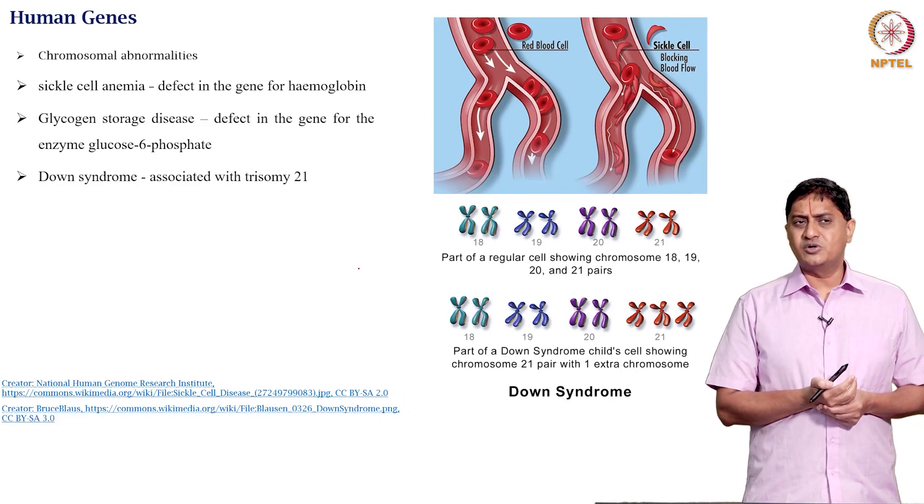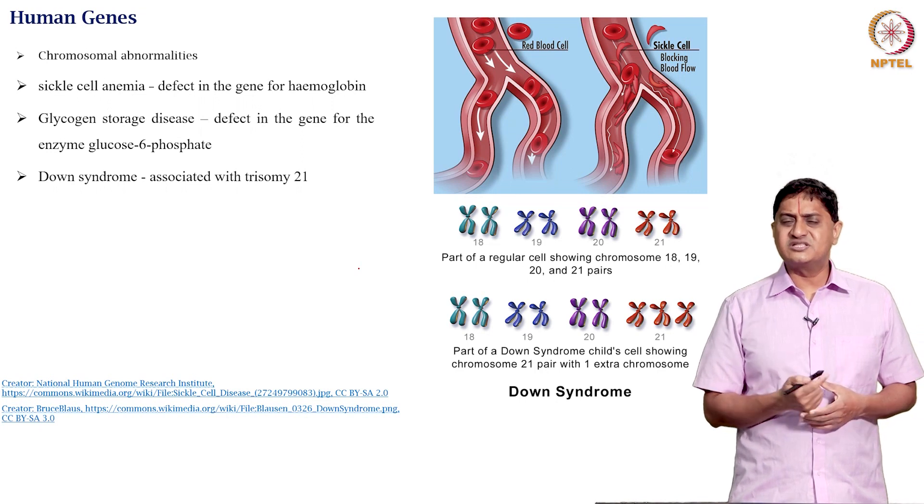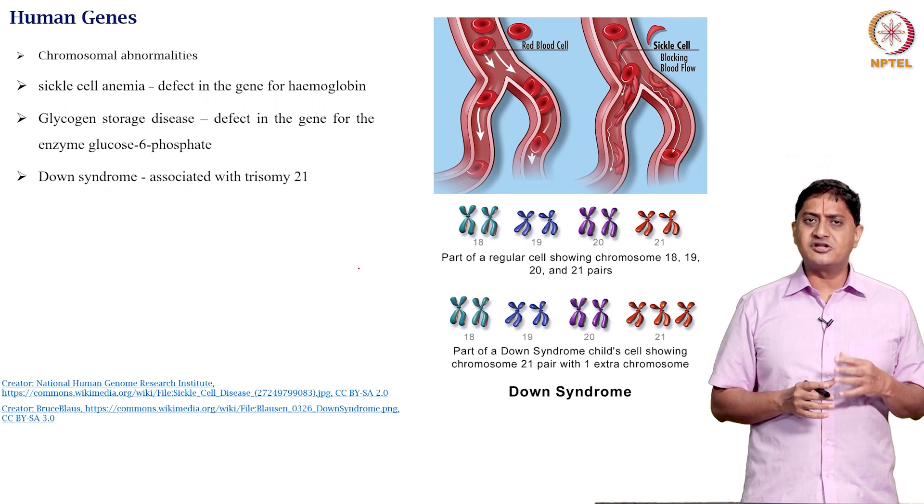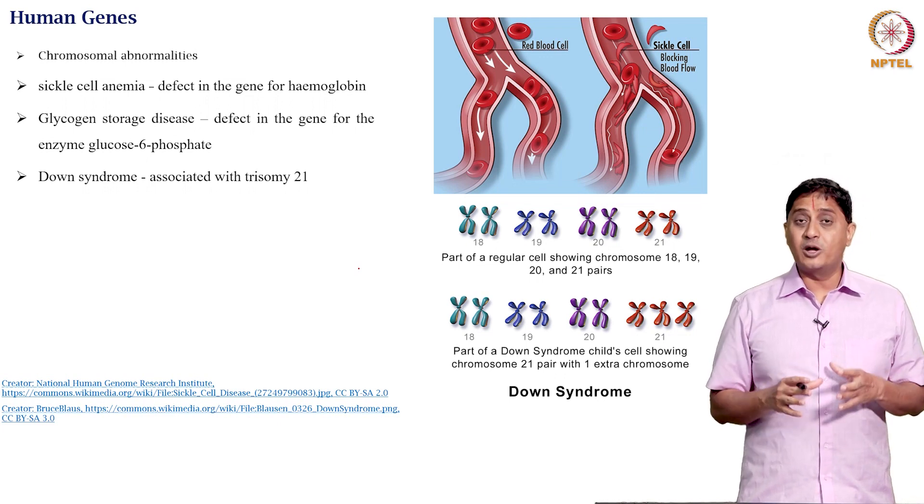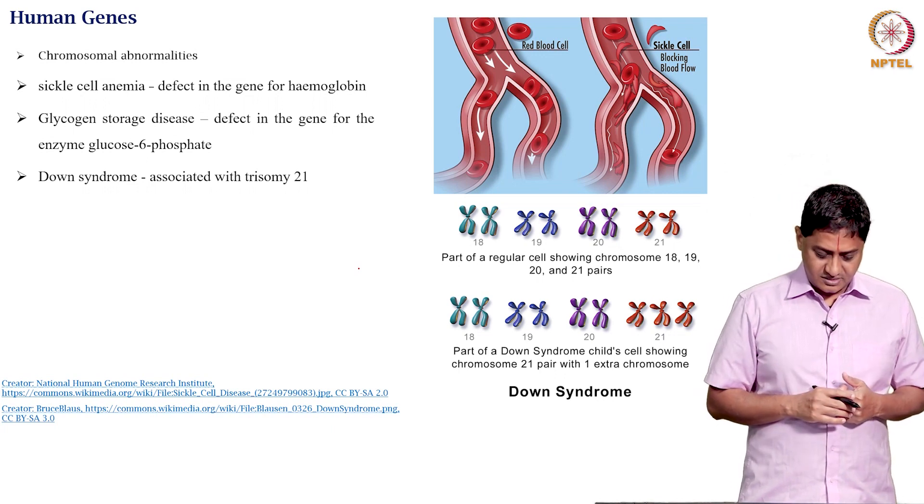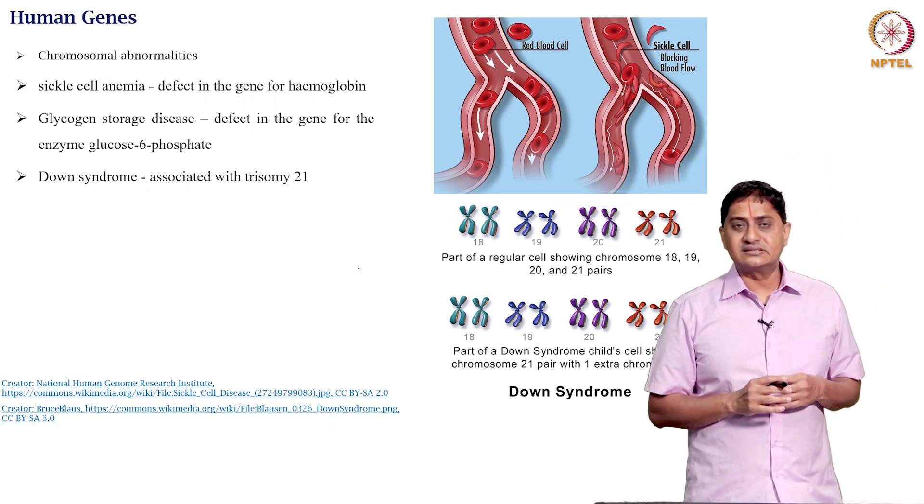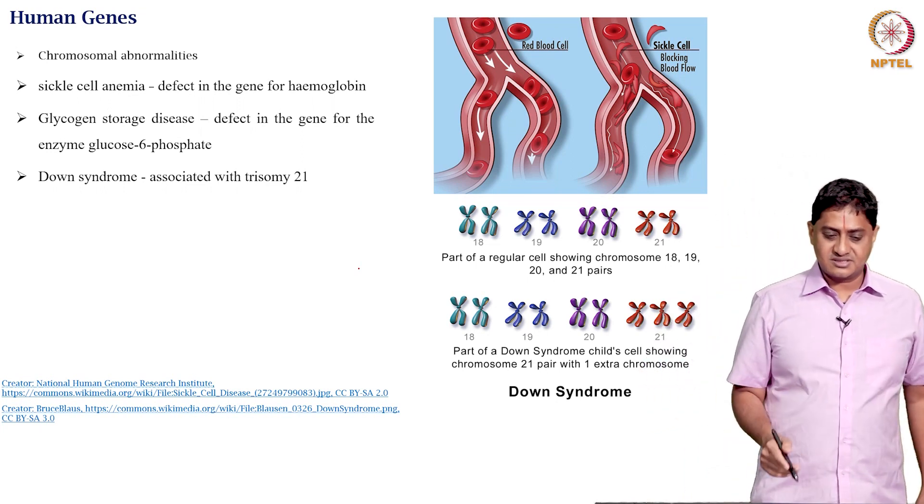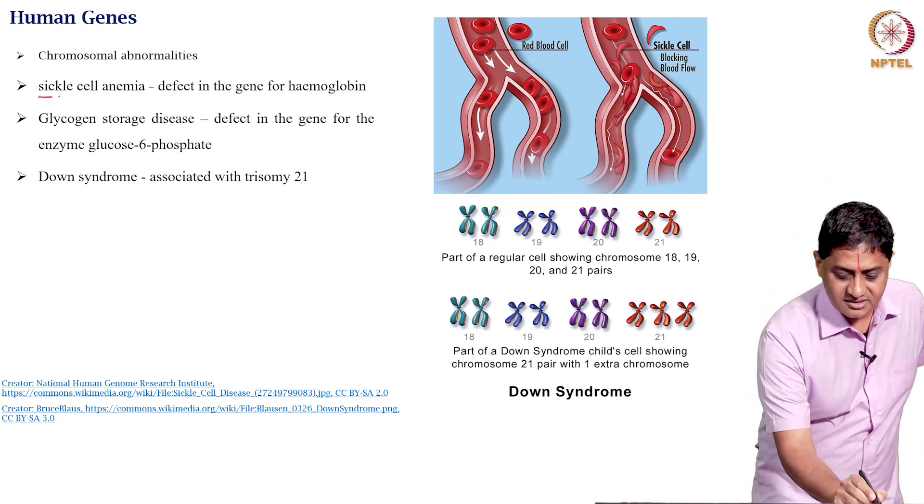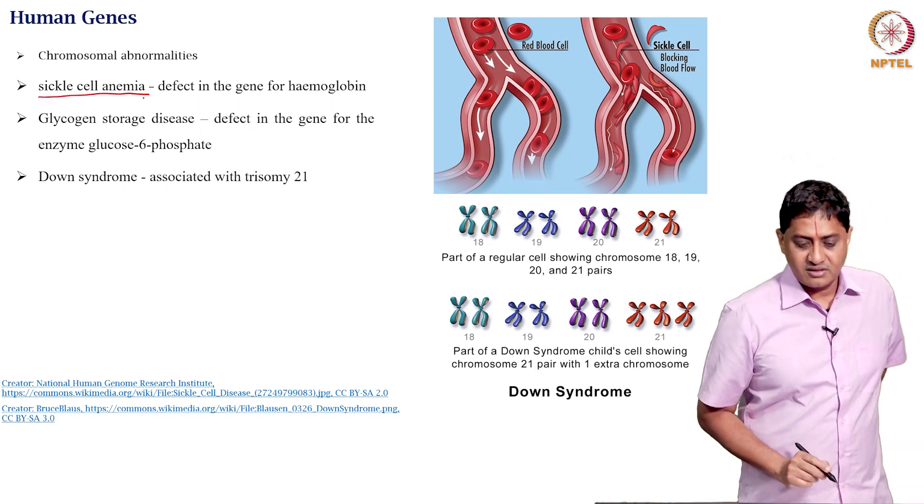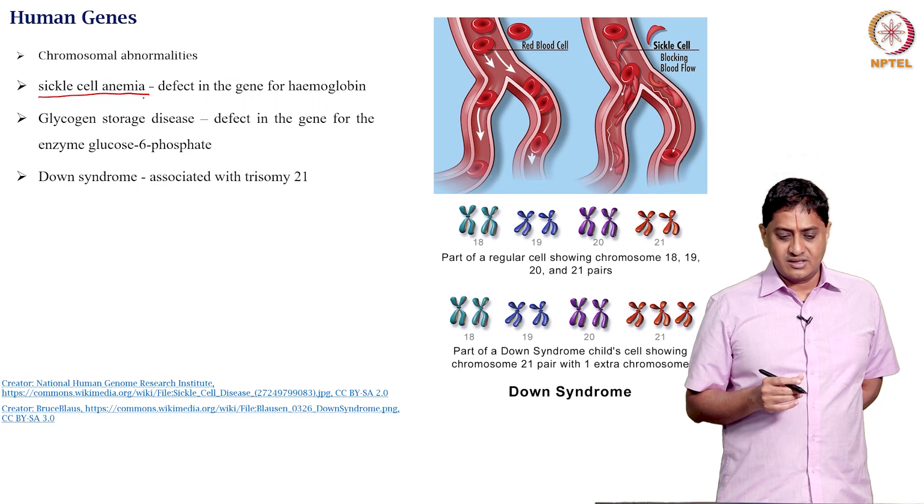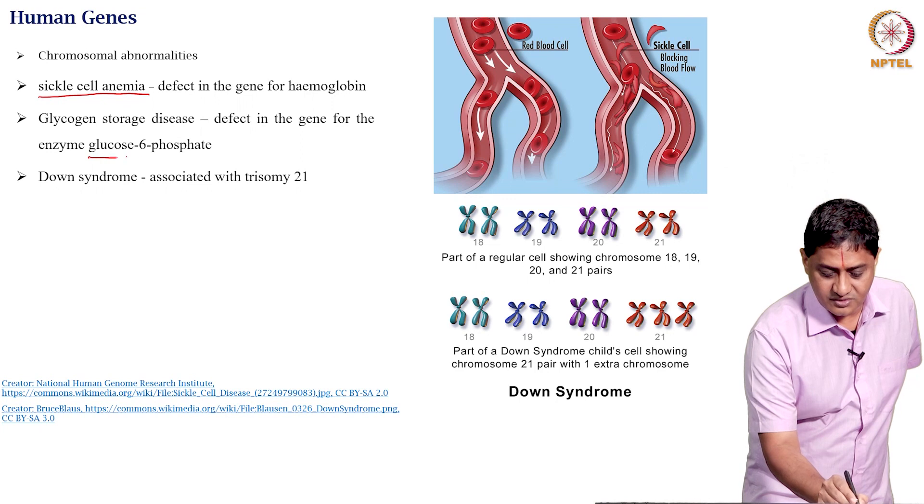Another idea that came about was that specific clinical disorders were somehow correlated with abnormal arrangement or abnormal chromosomes. This idea that some diseases are genetic originated from this thought process. Examples are sickle cell anemia, which showed some defect in the gene for hemoglobin, and glycogen storage disease, a defect in the specific gene for the enzyme glucose-6-phosphate.